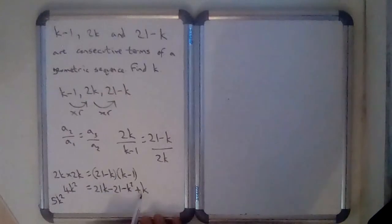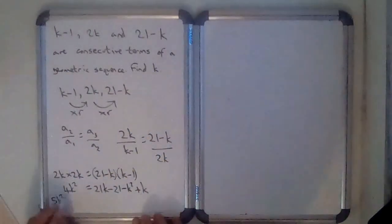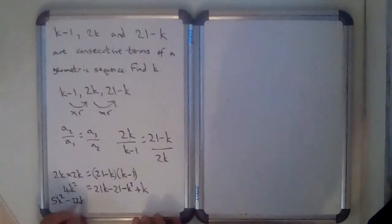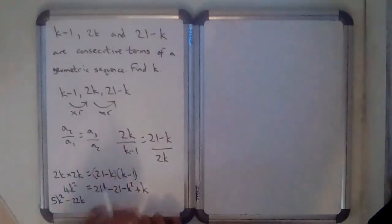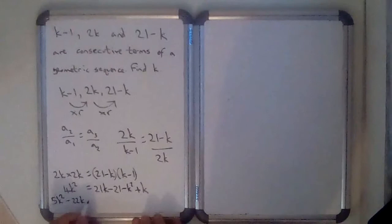...well, you've got 21k plus k is 22k. So when I subtract them, it'll be minus 22k. And then you've got minus 21. I'm going to add 21 to the other side. So plus 21 equals 0.